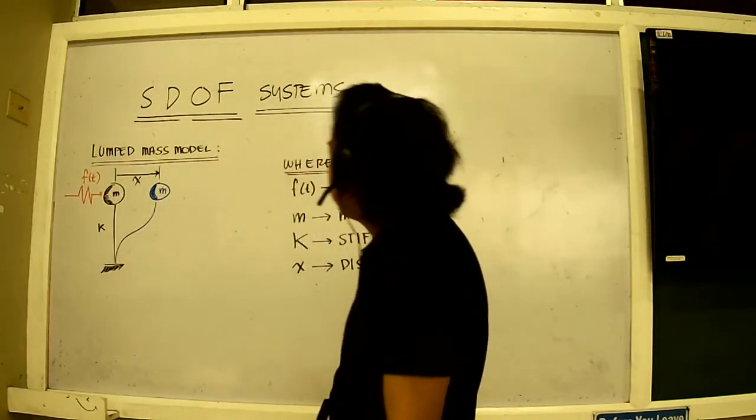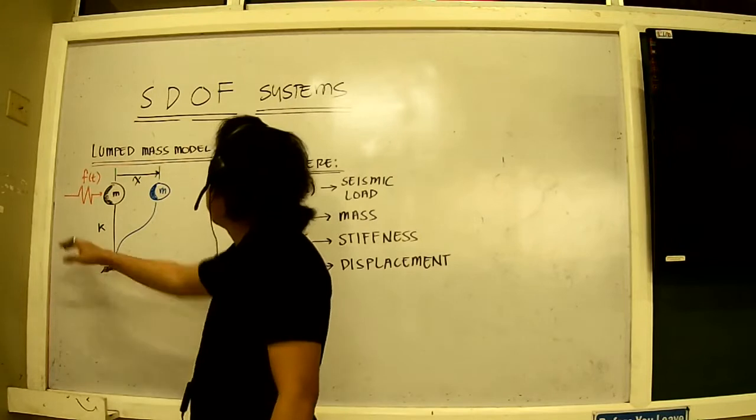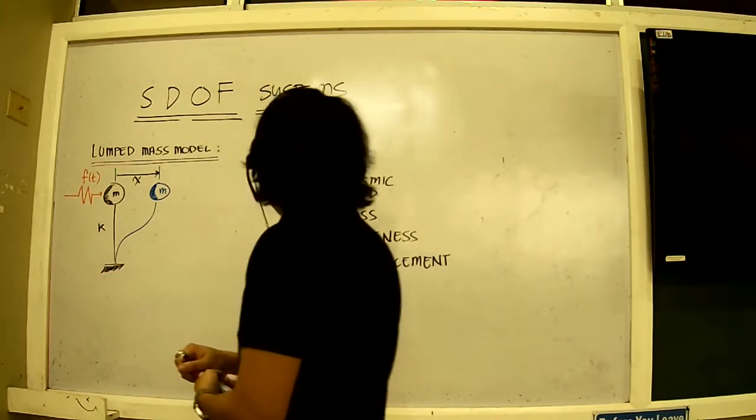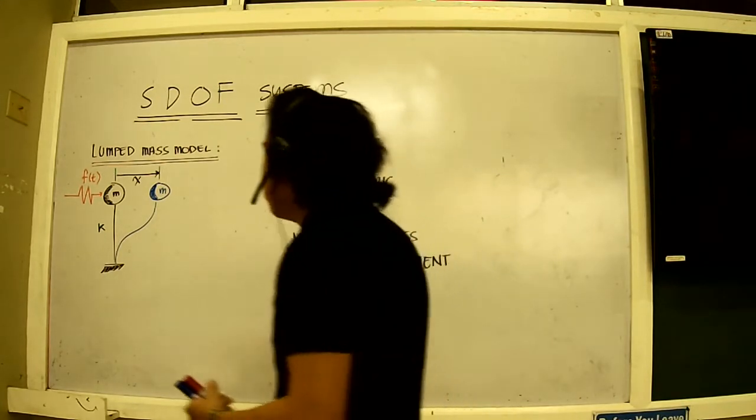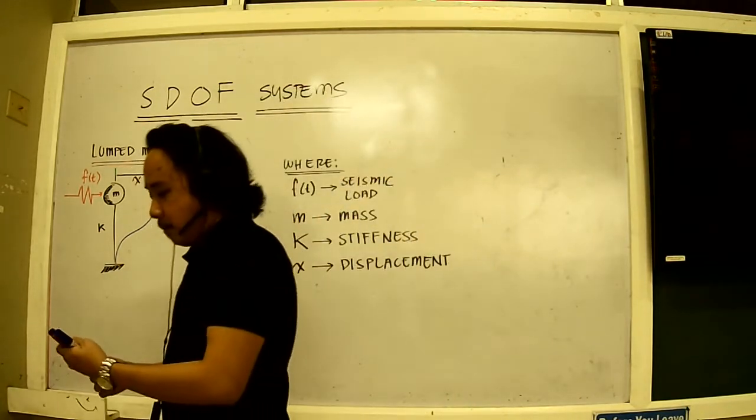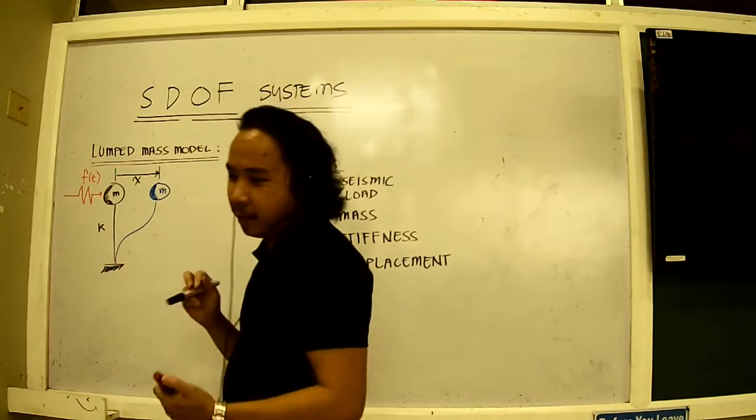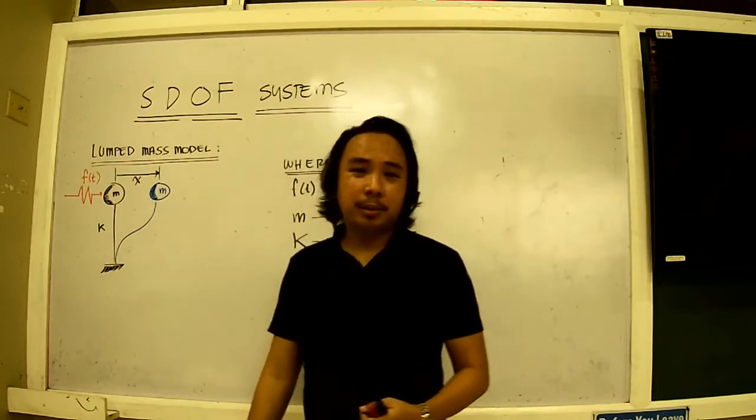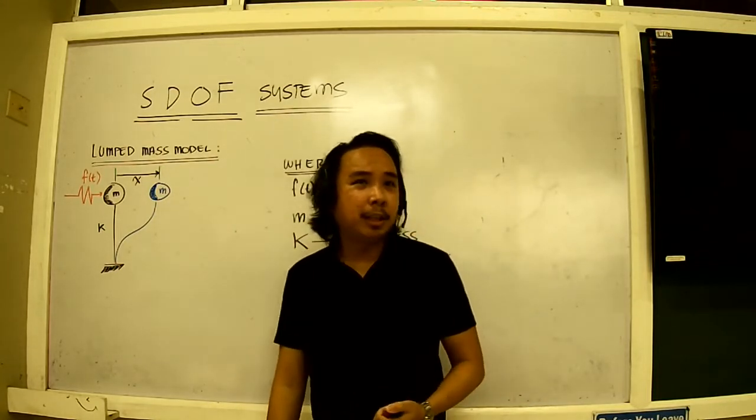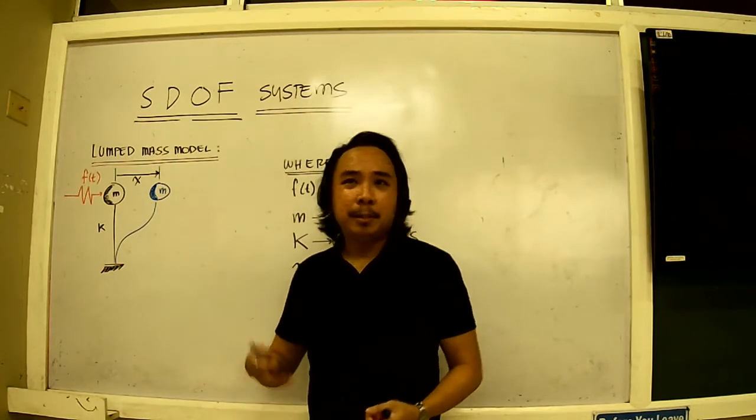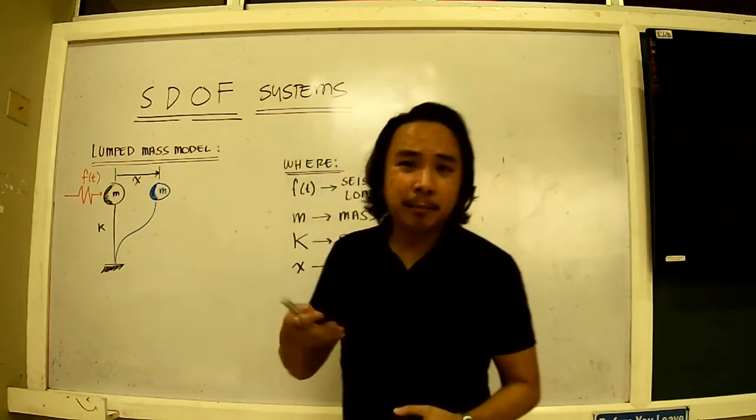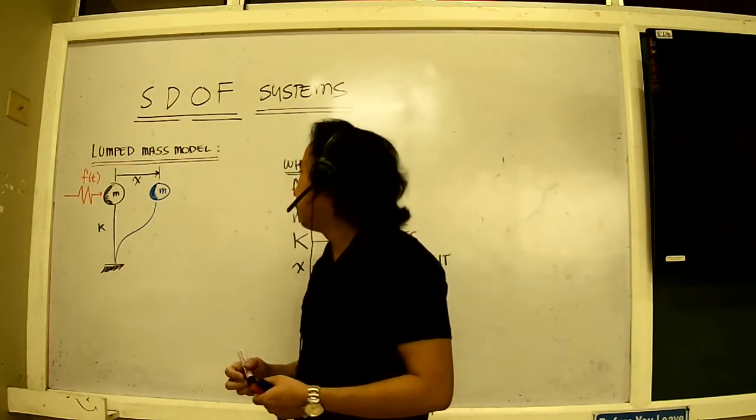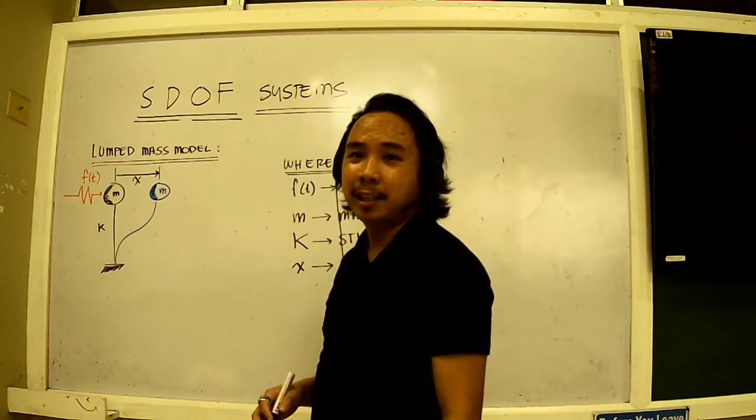Talking about the lumped mass model, it still retains the stiffness K, the original structure, and also the displacement, as well as the forcing function known as the seismic load. Now, other than that, there are also properties to the structure that is inherent here. Our structure possesses mass. There's what we call the personality, or rather, the characteristic of mass that somehow resists motion. That is what we call the inertia.